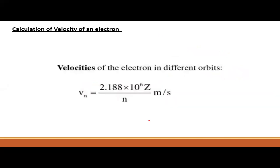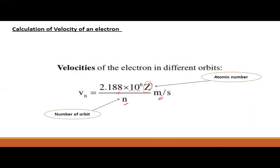For calculation of the velocity of an electron in different orbits: Vn = 2.188 × 10⁶ × z/n meter per second, where n is the number of orbit and z is the atomic number. These are the formulas by which we can calculate the energy, radius, and velocity of the electron.